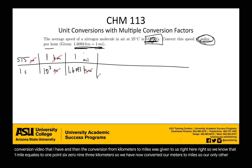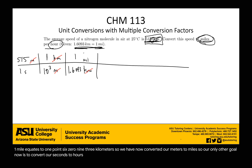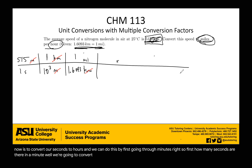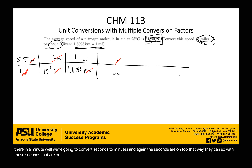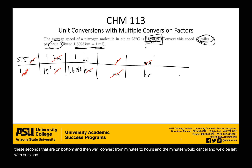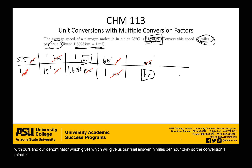Our only remaining goal is to convert seconds to hours, and we can do this by going through minutes. First, seconds are on top so they cancel with the seconds on the bottom. Then we convert from minutes to hours, and the minutes cancel, leaving us with hours in our denominator — which gives us our final answer in miles per hour. One minute is 60 seconds, and one hour is 60 minutes.